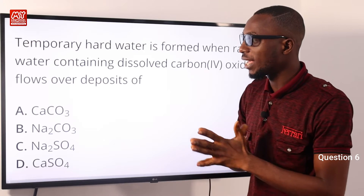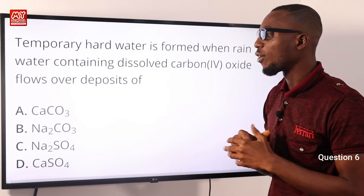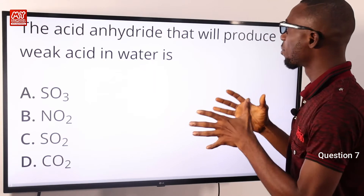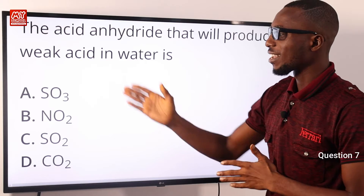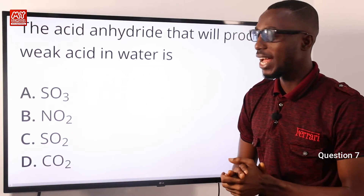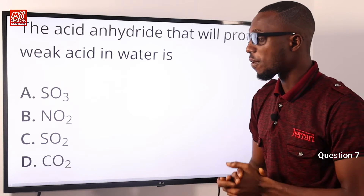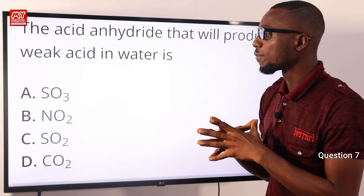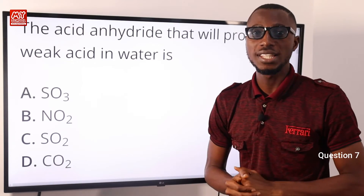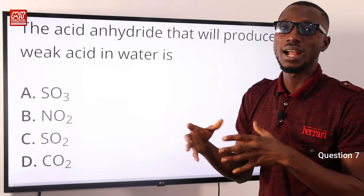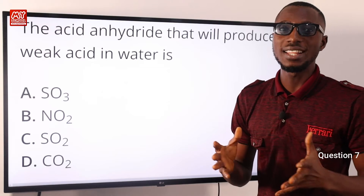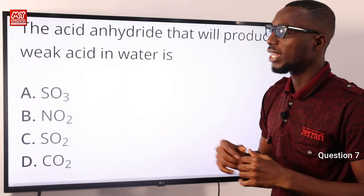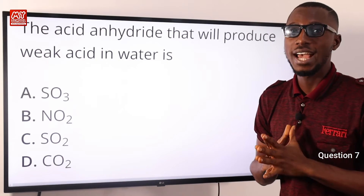The most viable option is option A for calcium trioxocarbonate. Question seven: the acid anhydride that produces a weak acid in water is what? SO3, NO2, and SO2 all dissolve in water to produce strong acids. Only CO2 dissolves in water to form trioxocarbonic acid (H2CO3), which is a weak dibasic acid that ionizes slightly in water — also known as soda water. So the correct option is option D for CO2.